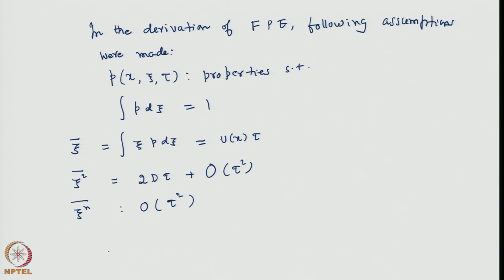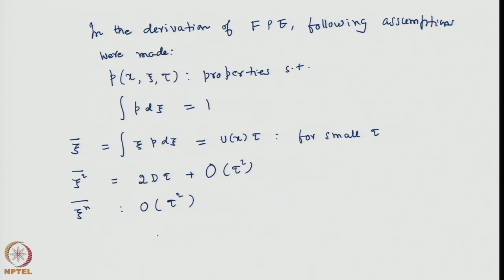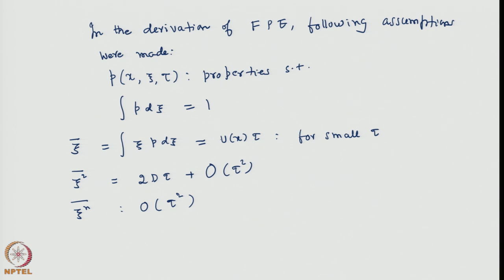With these assumptions, we could take the limit as tau goes to 0 using Taylor expansion, and found that strictly only the terms containing xi-bar and xi-squared bar survive — that is, those containing the coefficients u(x) and d(x). This was illustrated by constructing a Gaussian transition probability, to show that such a transition probability is physically realizable.